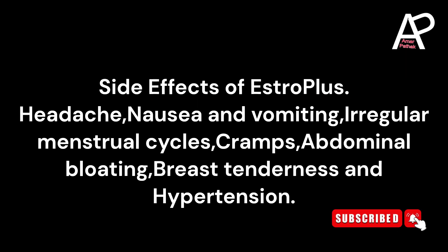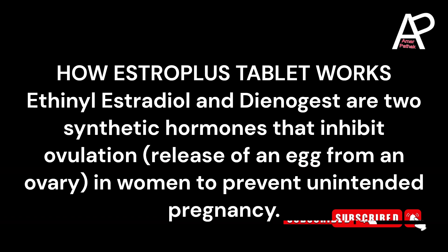How Estroplus Tablet works: Ethinyl estradiol and dienogest are two synthetic hormones that inhibit ovulation — the release of an egg from an ovary — in women to prevent unintended pregnancy.